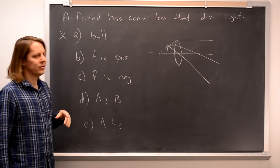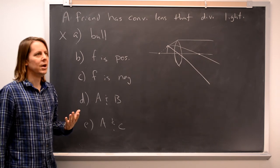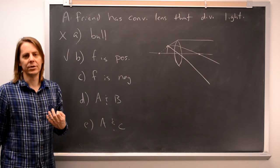Next you could say F is positive. The focal length value of the lens is positive. If your friend isn't lying to you, that has to be true. That's the definition of a converging lens.